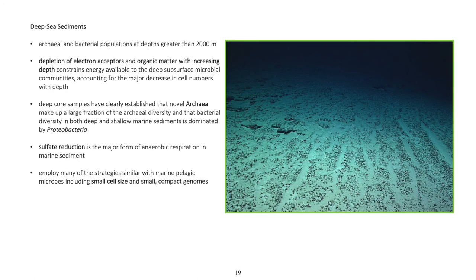Deep sea sediments: Archaeal and bacterial populations exist at depths greater than 2,000 meters. Depletion of electron acceptors and organic matter with increasing depth constrains the energy available to deep subsurface microbial communities, accounting for the major decrease in cell numbers with depth. Deep core samples have established that novel archaea make up a large fraction of archaeal diversity, and bacterial diversity in both deep and shallow marine sediments is dominated by proteobacteria. Sulfate reduction is the major form of anaerobic respiration in marine sediment. These communities employ many strategies similar to marine pelagic microbes, including small cell size and small, compact genomes.